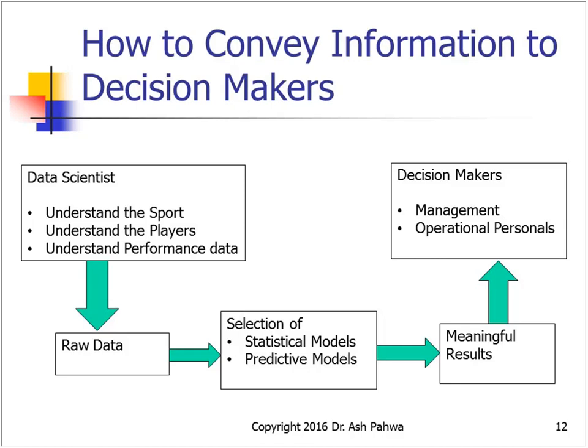Sports generate tons and tons of data. The problem is that most decision makers — the general managers and team owners — don't understand the raw data. The goal of a data scientist is to understand the sport's rules, the players, and the performance data. This raw data has to be fed into statistical models and predictive models to get meaningful results that can be conveyed to decision makers. Otherwise, there's just too much raw data to make sense of.